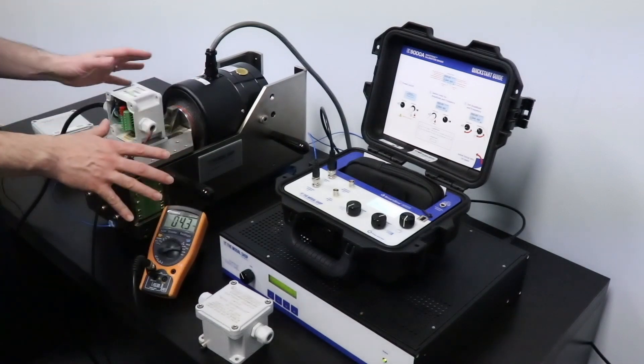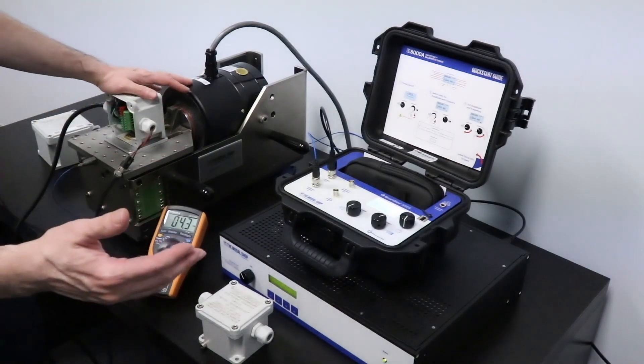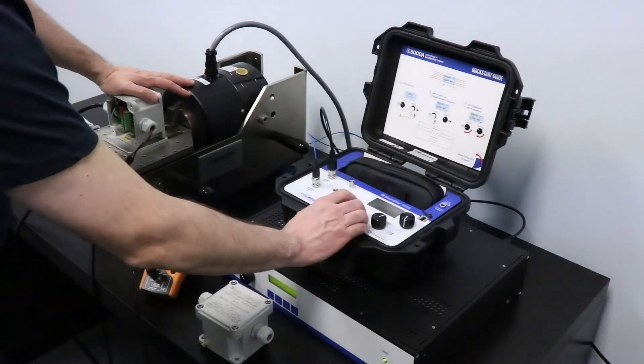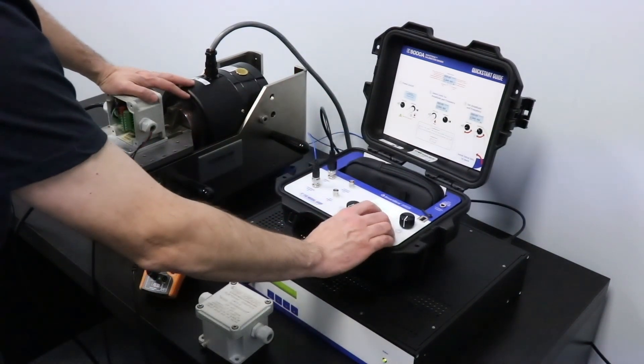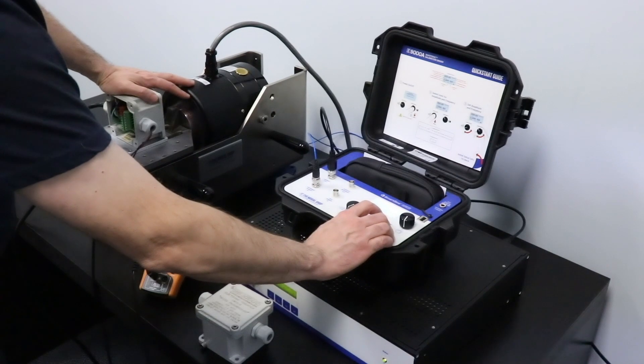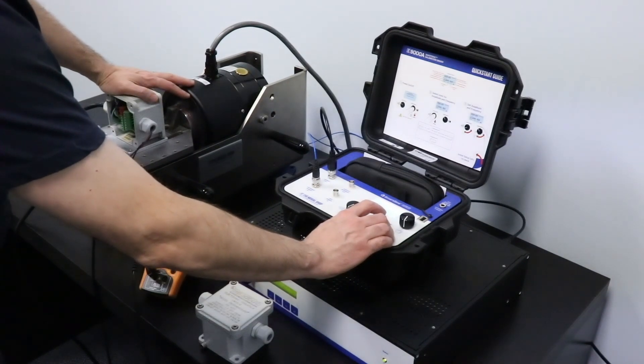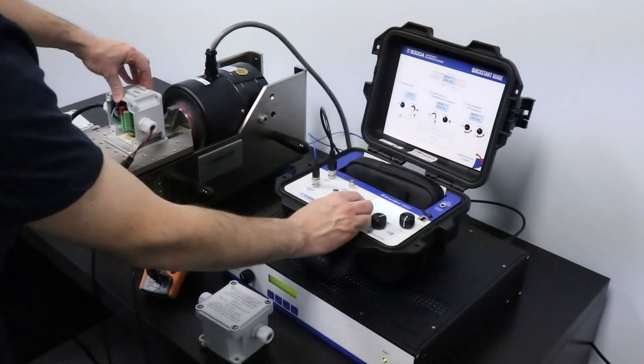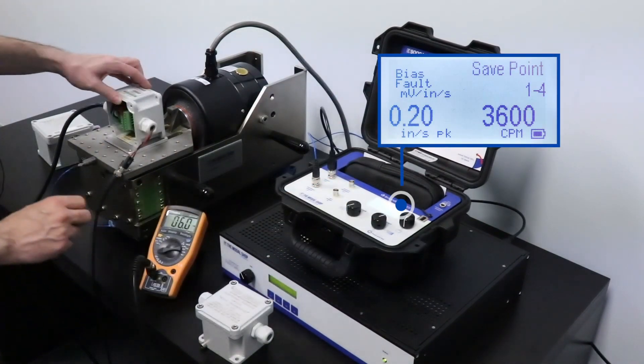This is a 4-20 milliamp device. So right now there's four milliamps, no vibration. And I'm going to turn my shaker table on. So currently everything is running as expected. 3600 RPM and 0.2 inches per second, which is about five millimeters per second peak.